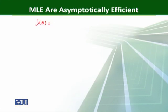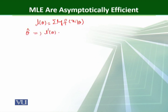The likelihood function L of theta equals the sum of log f of xi given theta. The MLE theta hat is the solution of L dash theta equals 0, so if we take the derivative and equate it to 0, we find the value of theta hat.